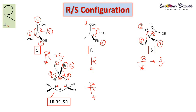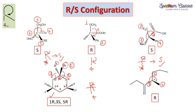If a molecule shows only three groups, the fourth group is hydrogen which is not shown and is by default considered on the dashed wedge — i.e., on the vertical line. Decide priorities for the three shown groups: first, second, and third priority. Rotation is clockwise, and since the fourth priority hydrogen is on the dashed wedge, the configuration is R.